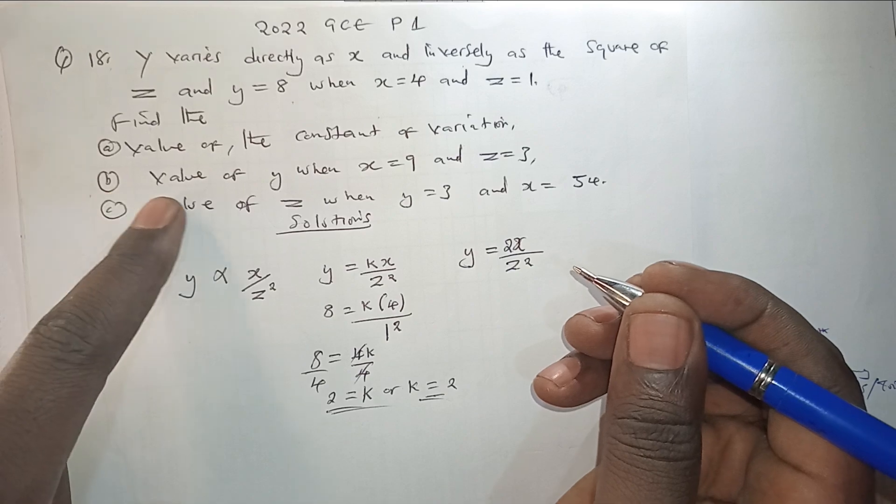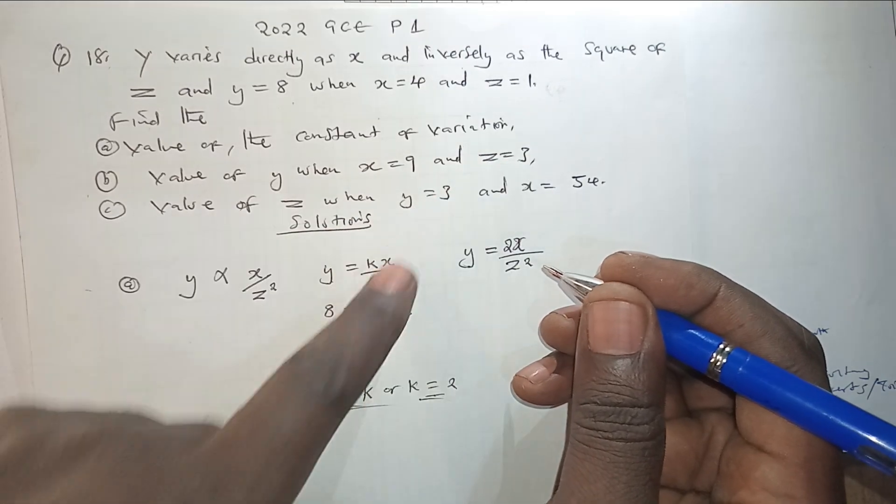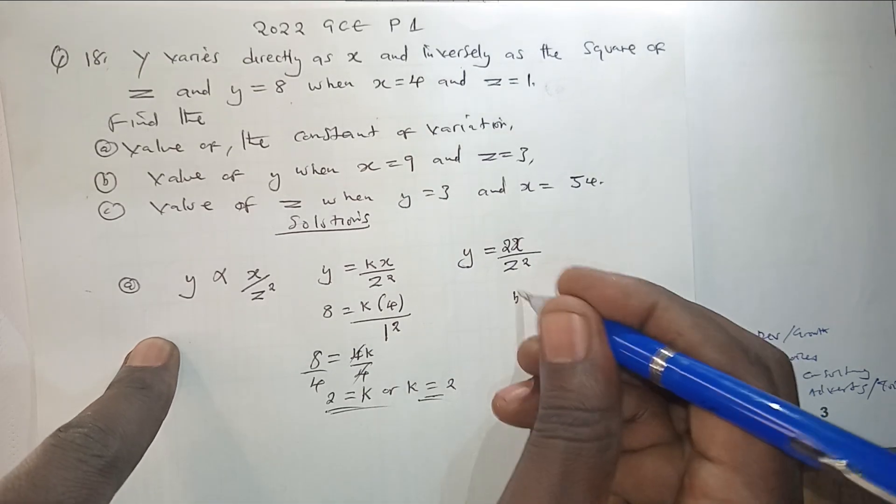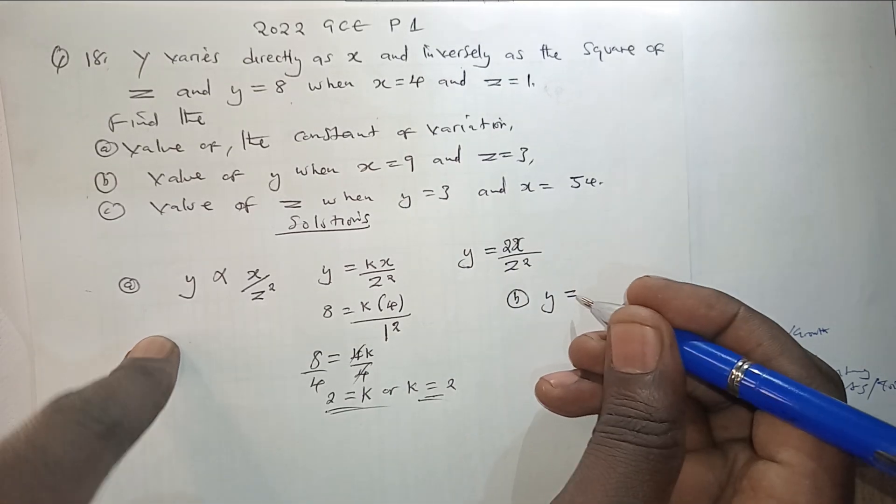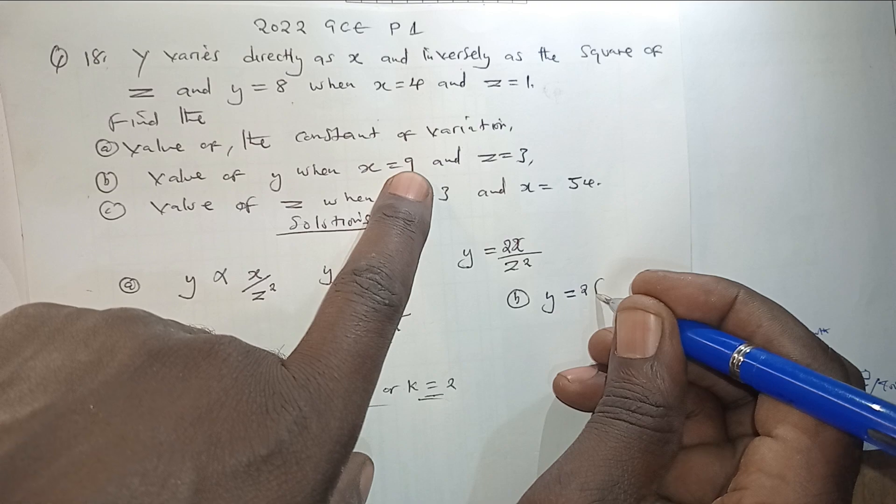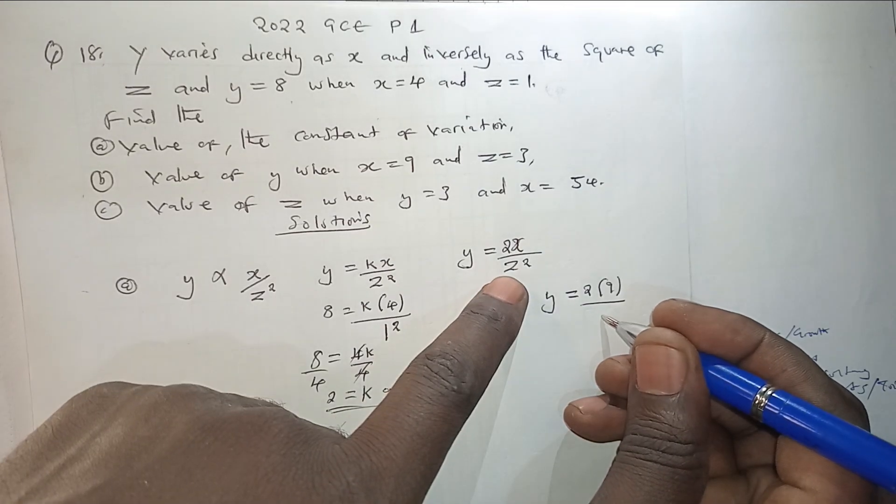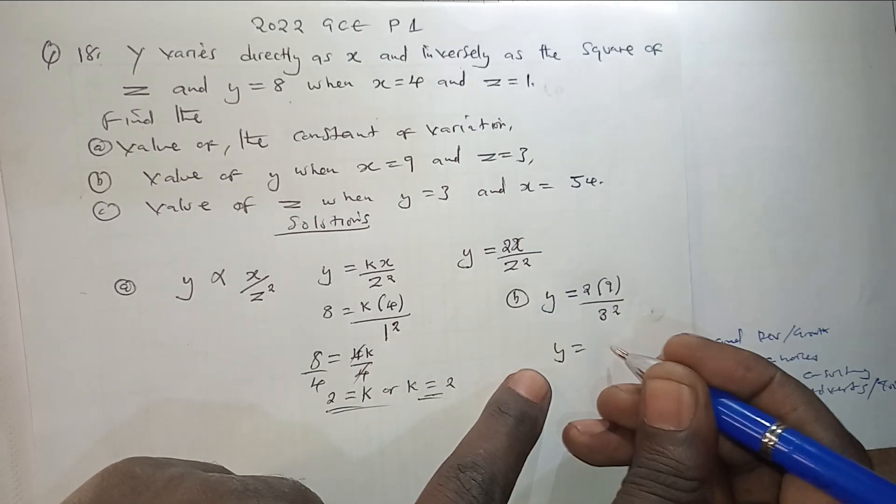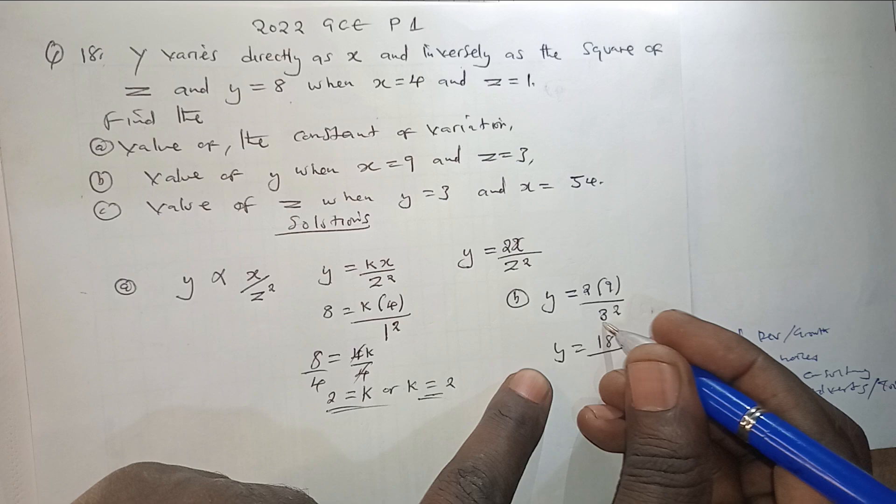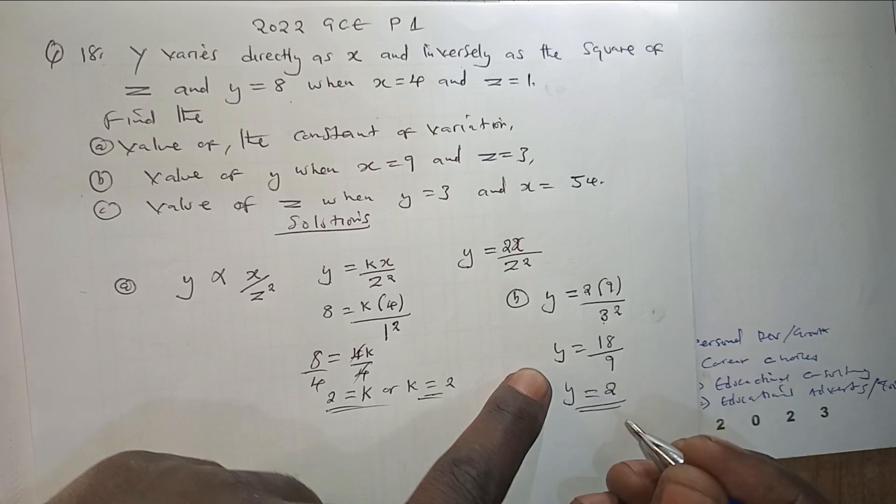We can move to the second part, which is asking us to find the value of Y when X equals 9 and Z equals 3. For part B, we are going to say Y equals 2 times 9 over 3 squared. So this shall come to 2 by 9, we get 18 over 9 from 3 squared, it's going to give us a 9. So Y is going to be equal to 2. That is the value of Y.